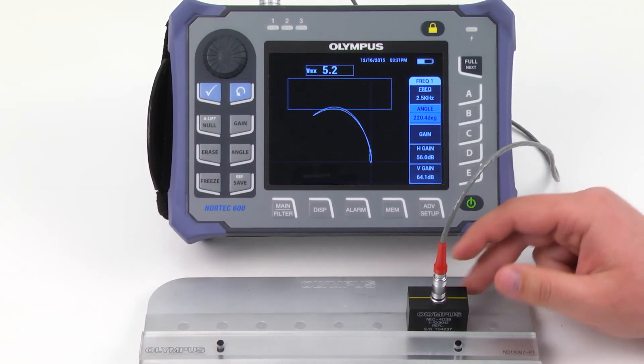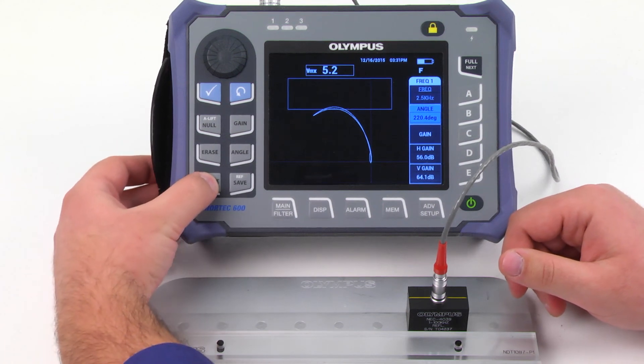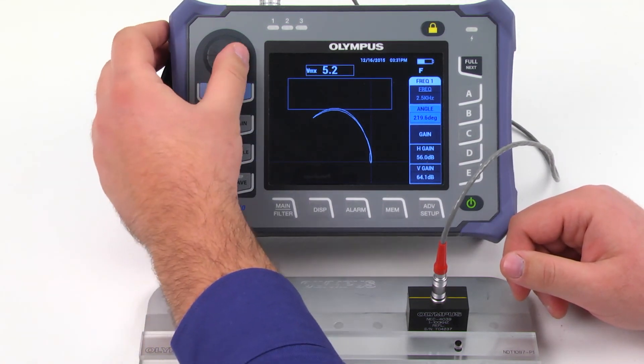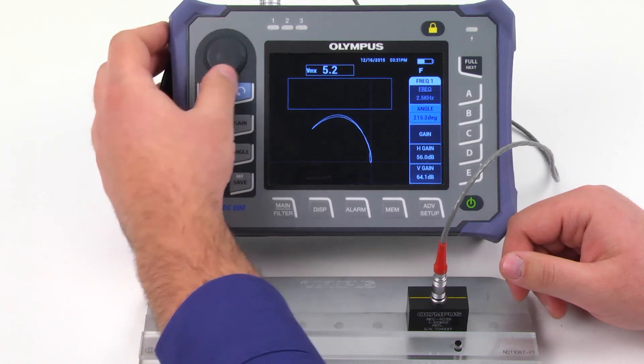Slide the probe to scan an undamaged rivet. Press Freeze. Using the angle key and knob, adjust the signal so that the starting and end points are both parallel.